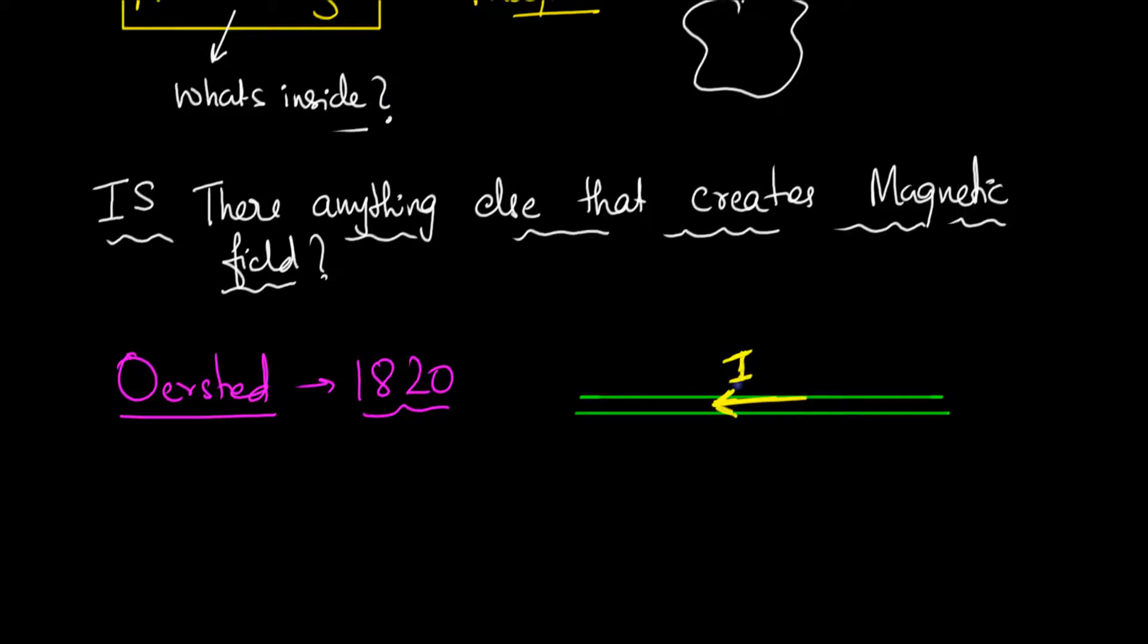What he finds out is when you send a current through a wire, if there's a magnetic needle nearby which happened to be there on his table, then that needle will experience a deflection. That needle will get deflected due to the current.